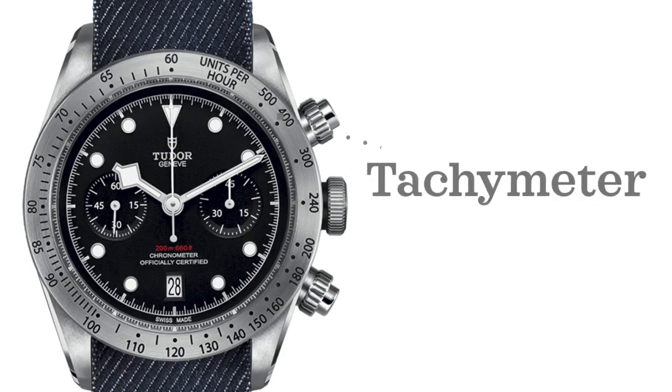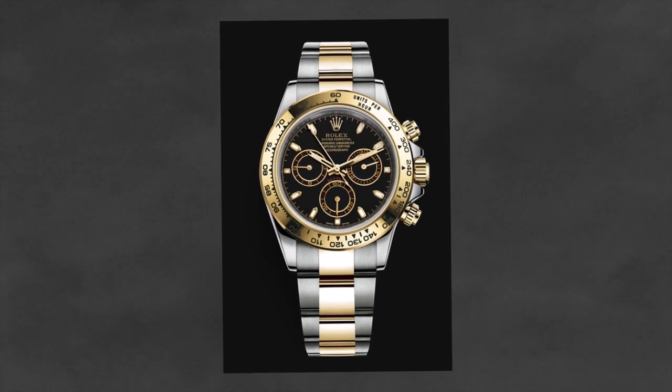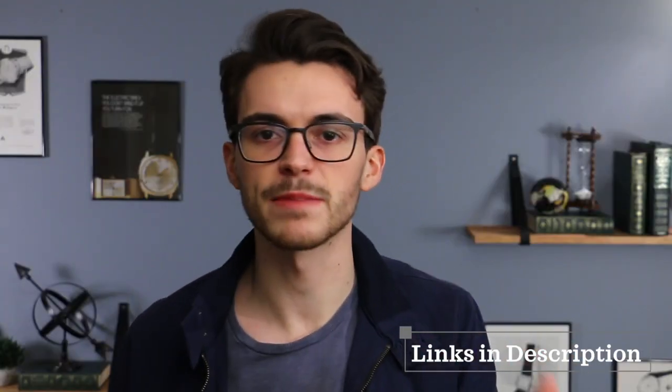Have you ever looked at a watch bezel and seen a ton of numbers and wondered what they were for? That is a tachymeter — a scale marked typically around the outermost part of the dial or bezel that can be used to track speed based on travel time, or measure distance based on speed. For example, on the Omega Speedmaster, you reset the seconds hand to 12 o'clock and time the event. Once done, you stop the chronograph. If it took 10 seconds, the tachymeter reads 360, meaning you could perform that task 360 times per hour — it's a per-hour conversion.